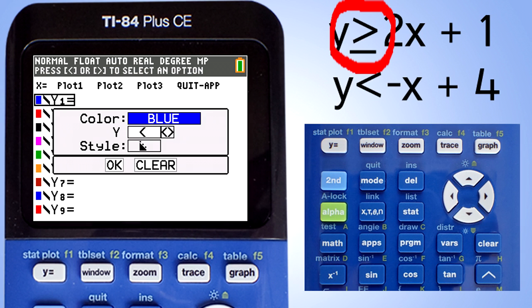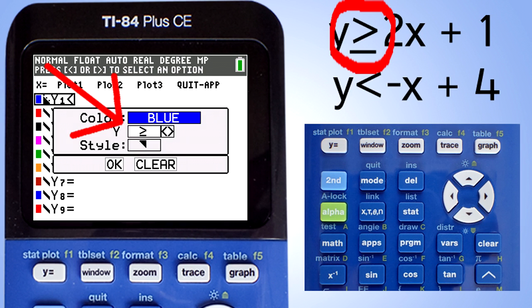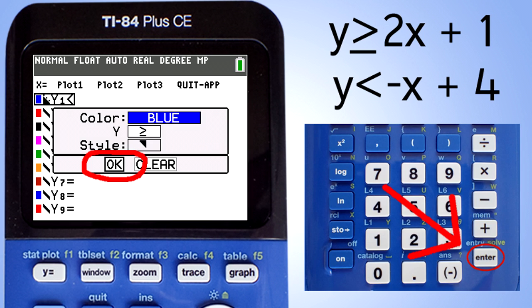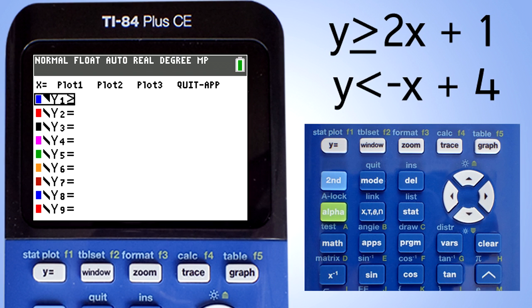In this case we need a greater than or equal sign. There it is, the greater than or equal sign. Now use the down arrow key and highlight the OK. Press the enter key here at the bottom right of the keypad. It takes you back to this screen.